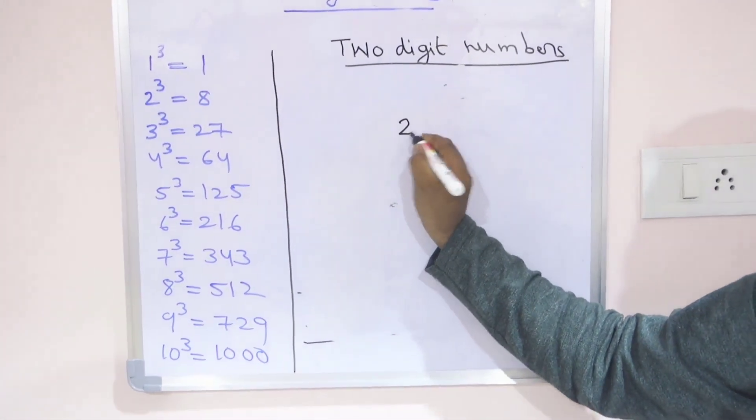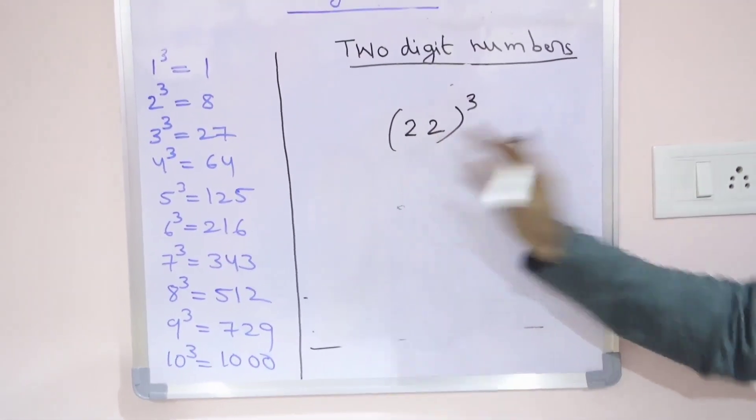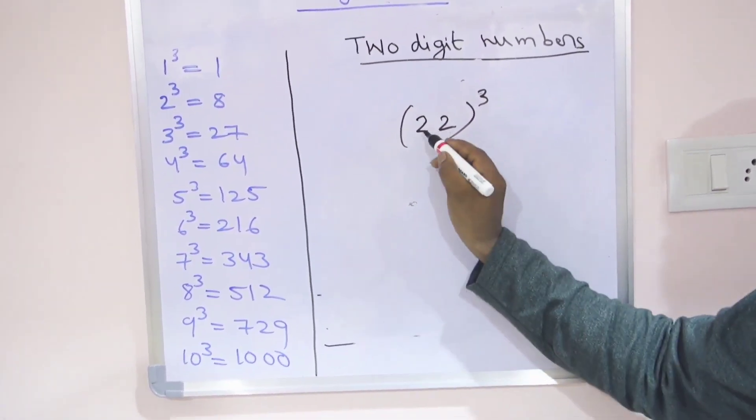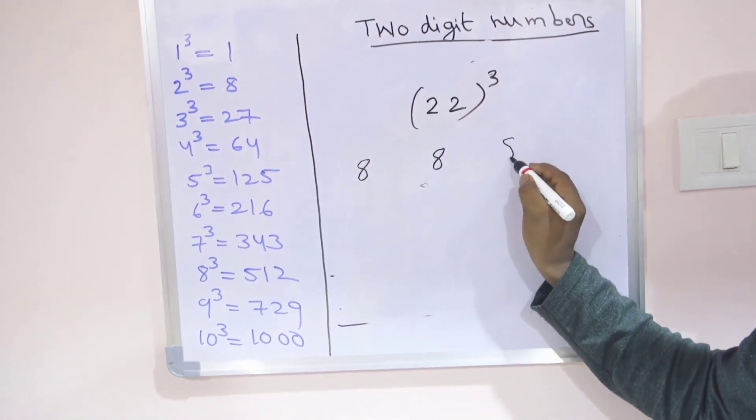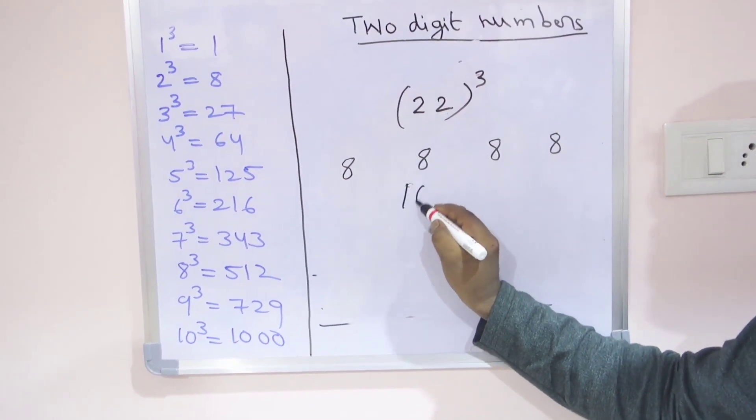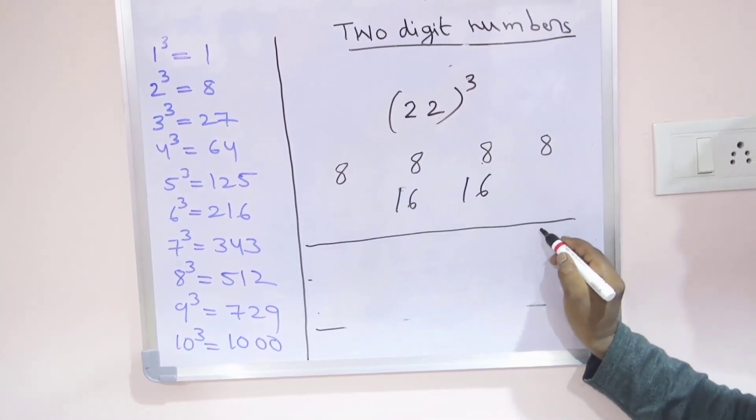First of all, 22 whole cube. In this method, same numbers are there. Same numbers means first of all, 2 cube is how much? 8. Here also 2 cube is 8. So write 8 four times: 8, 8, 8, 8. Middle of the numbers, 8 double is 16, here also 8 double is 16. Same methods we can apply here also.